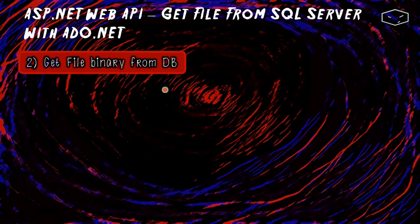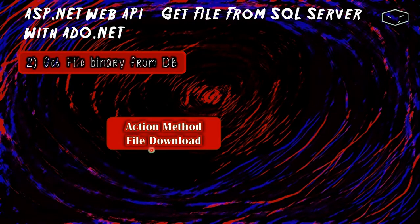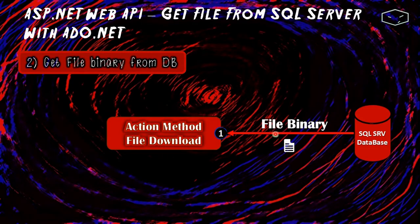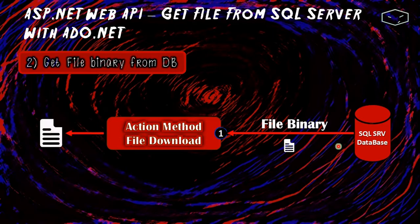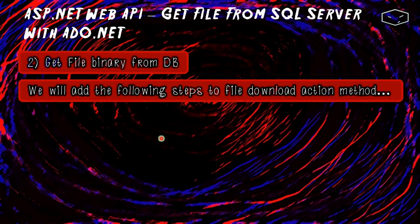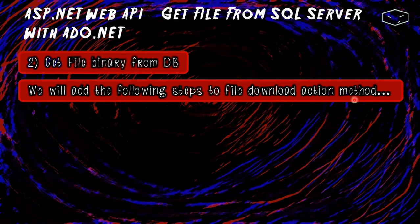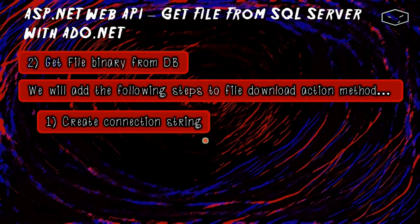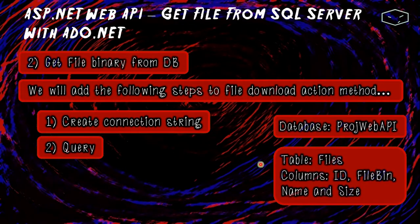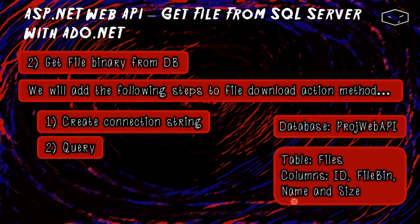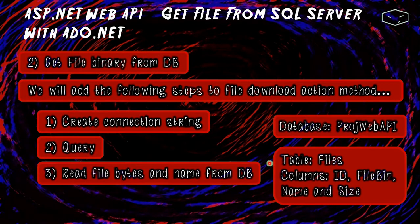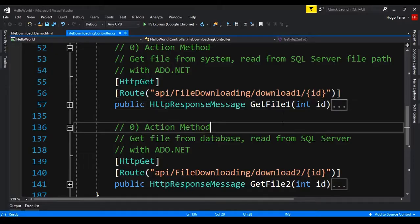Now let's do getting the file binary from the database. It's very easy: we have the file download action method, get the binary of the file from the database, and send it to the client. The steps are exactly the same as the previous case — create the connection string and create a query. But this time we query the files table, which has columns: id, file_bin (the binary of the file), the name of the file, and the size of the file. Lastly, we read the file bytes and the name from the database.